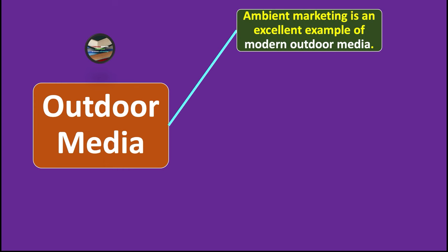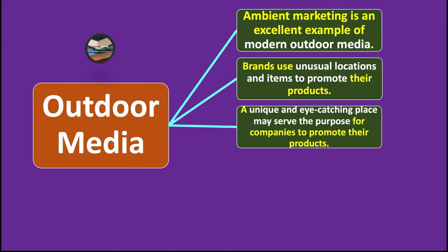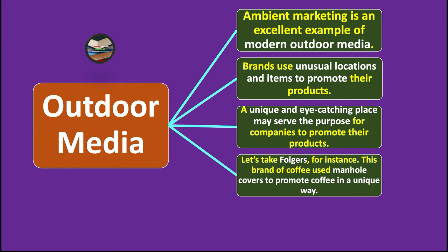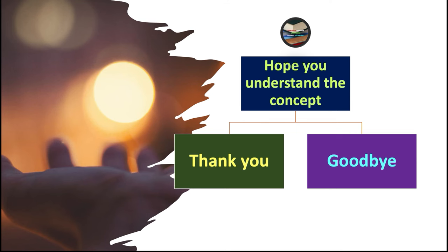Outdoor media involves ambient marketing, which is an excellent example of modern outdoor media. Brands use unusual locations and items to promote their products — a unique and eye-catching place may serve the purpose. For instance, the coffee brand Foleja used manhole covers to promote coffee in a unique way. Places like bus stops, public transport, and buildings can serve creative companies as places for promotion. That's all — hope you understand the concept. Thank you and goodbye.